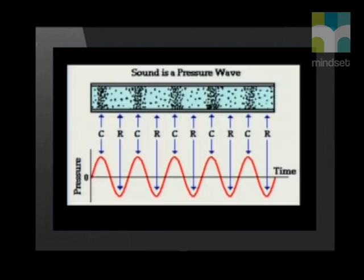It is hard to see the amplitude on a longitudinal wave, but we can relate the wave motion back to a transverse wave. This will help us to indicate the amplitude and points in and out of phase.